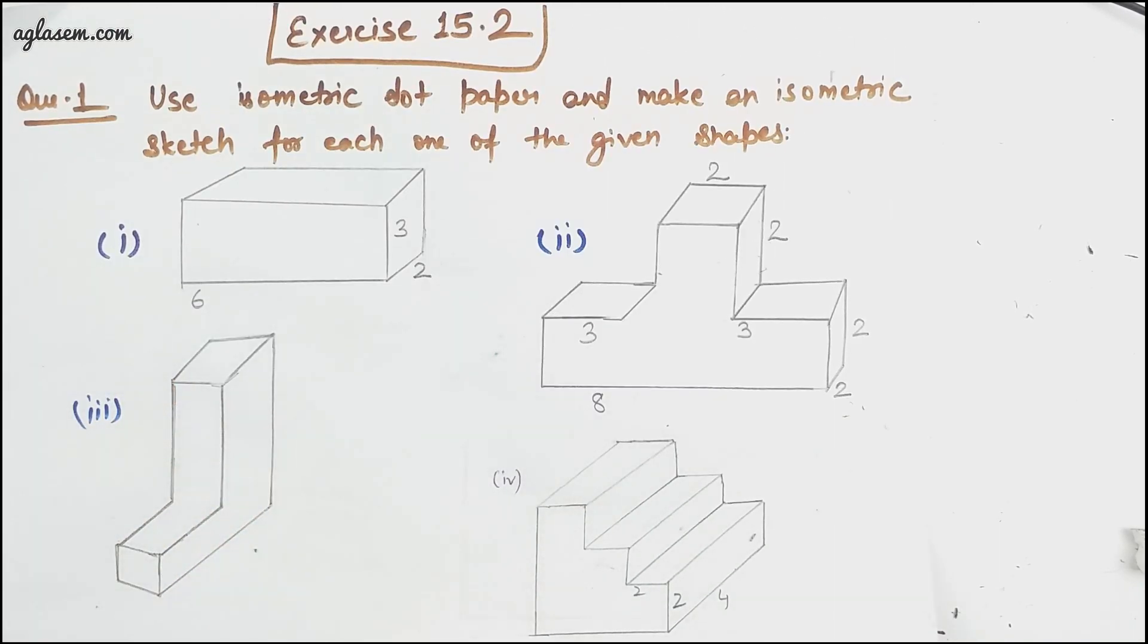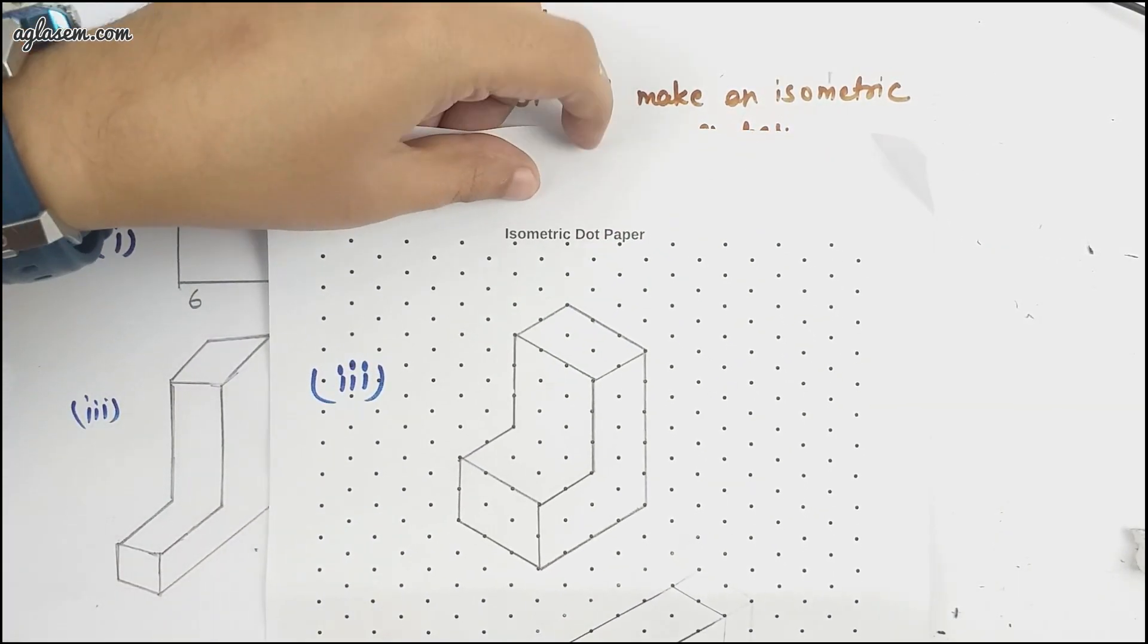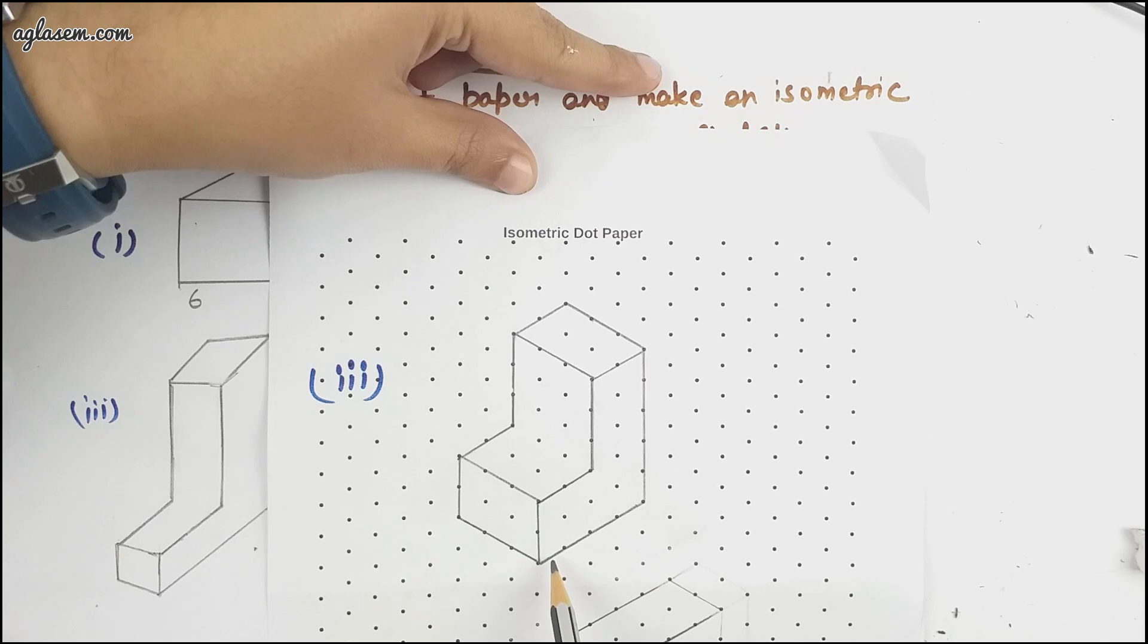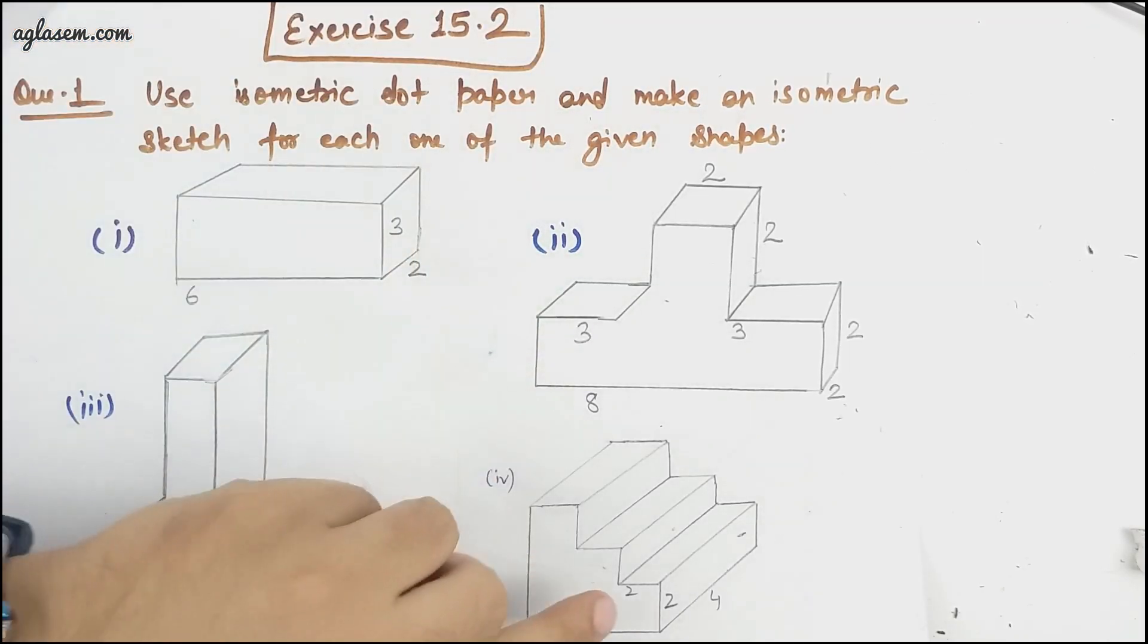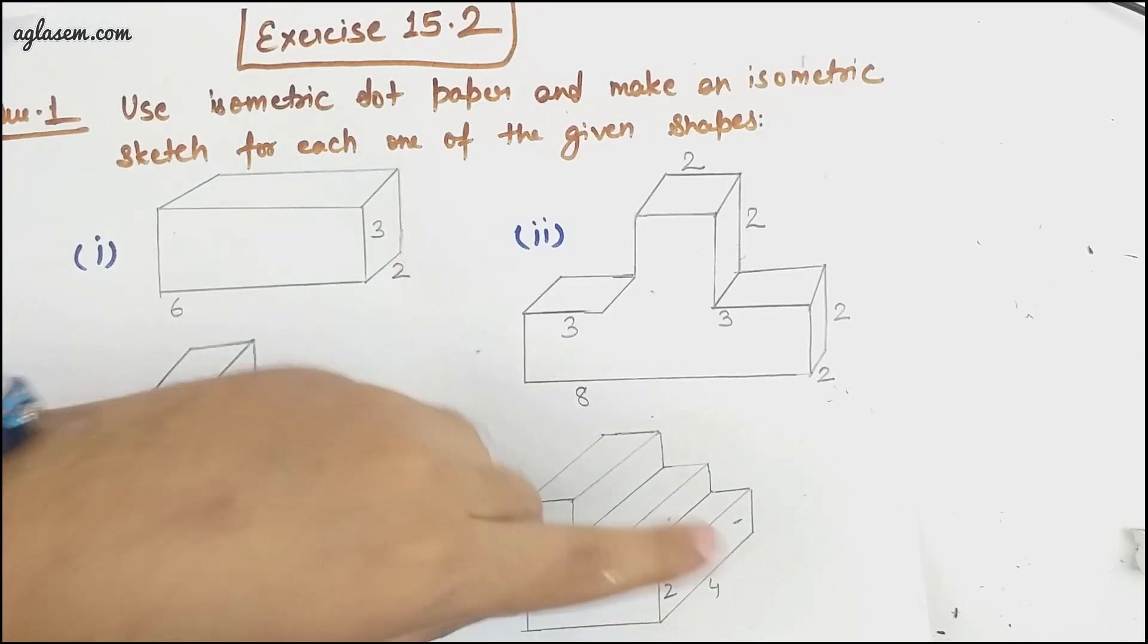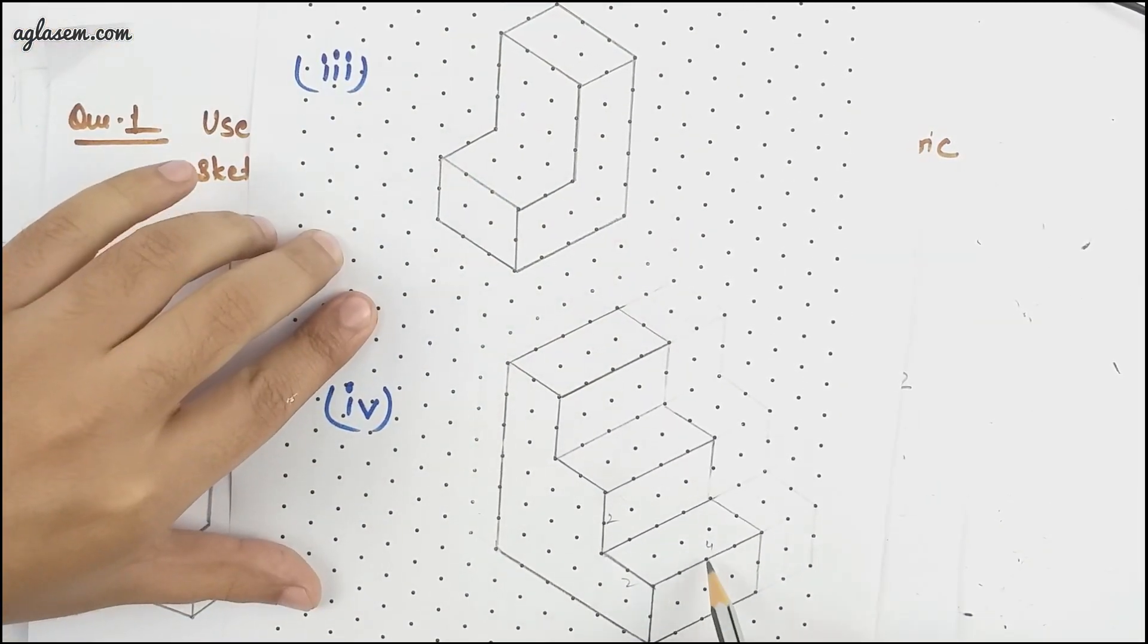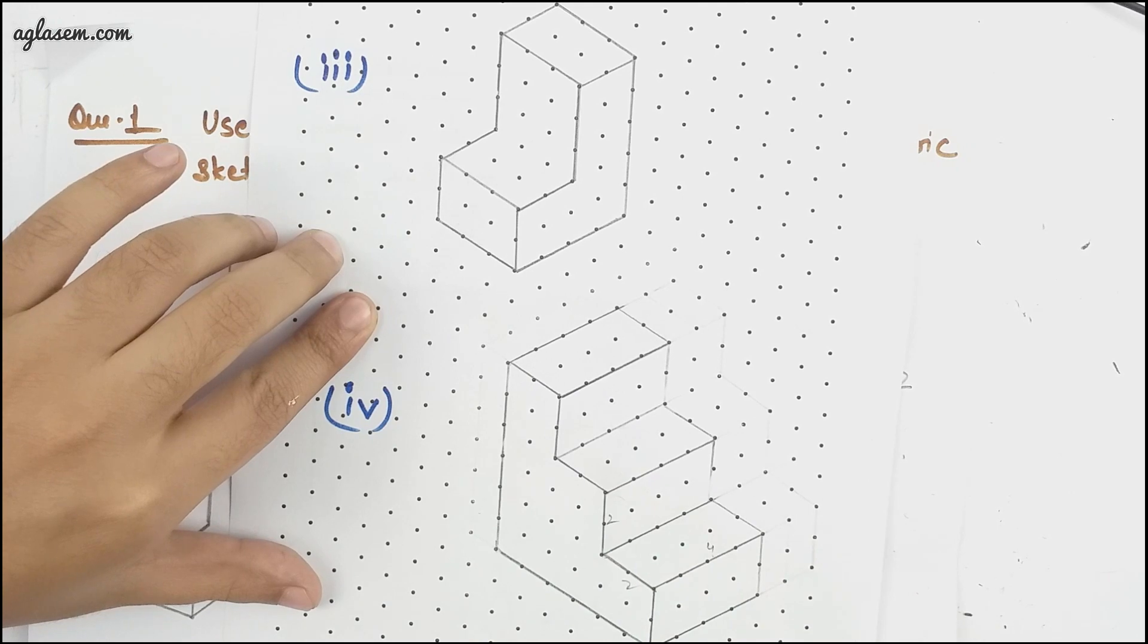And lastly if it is the stair ladder kind of case with two this side, two this side and four this side, so this is how it will look like four this side, two this side and two is the height. Moving to question number two.